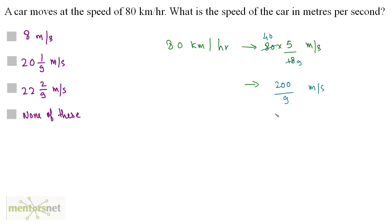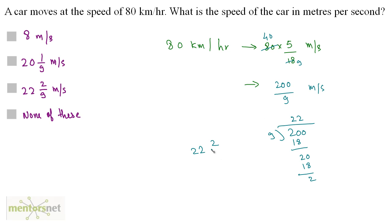Now you will have to solve it again. You have 200 divided by 9. 9 twos are 18, 2 is the remainder. This 0 comes down. Again, 9 twos are 18, 2 is the remainder. So this is actually 22 and 2 by 9 meters per second. So this is the speed, and the answer is option C.